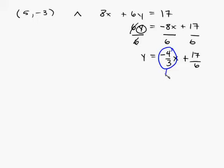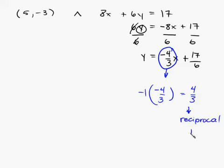So what we do is we multiply it times negative 1 and take the reciprocal of it. So if we multiply negative 4 3rds times a negative 1, we'll get 4 3rds. And if we take the reciprocal of it, we'll get 3 4ths. So that means our slope, 2, is going to be 3 4ths.